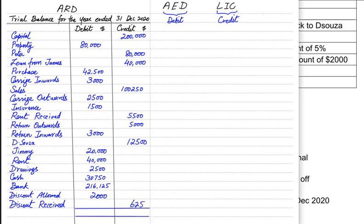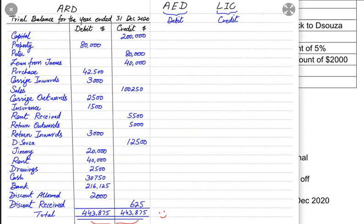How can we balance the trial balance? We just need to add up both of the sides — the debit as well as credit. If we have made correct double entry and for every debit entry we have made a corresponding credit entry, then the debits and the credits should always be equal. And if debits equal credits, we say that the trial balance has been balanced. This was the process to make our trial balance. I hope you were able to understand the underlying concepts regarding trial balance.